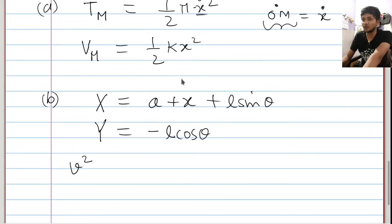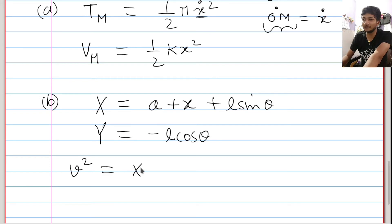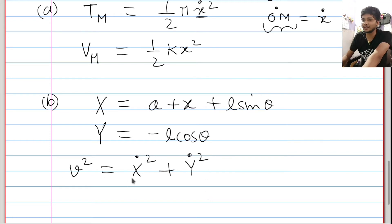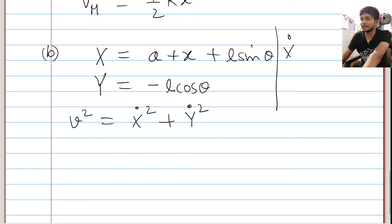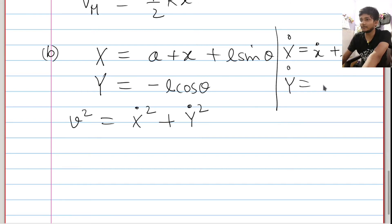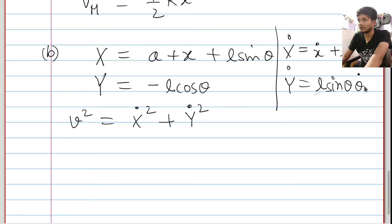Now velocity squared is the sum of x-dot squared and y-dot squared. So we differentiate X and Y with respect to time. X-dot will be (x-dot + L cos theta · theta-dot), and Y-dot will be (L sin theta · theta-dot) — applying the chain rule carefully.